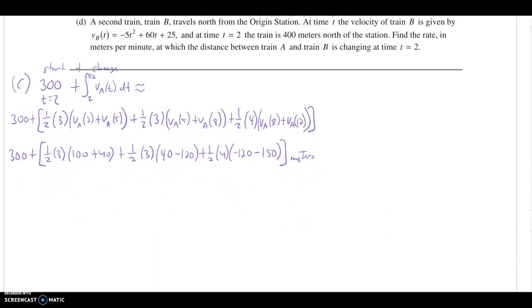Moving to part D. Now, we're going to add a second train to this problem. We already have our train A going east and west, but now we're going to add this train B moving north and south. At time T, the velocity of train B is given by this. We had our VA of T table. We have a velocity of B function. At time 2, that train is 400 meters north of the station. Find the rate in meters per minute at which the distance between those two trains is changing at this time 2. If you think about the directions the trains are moving and where that distance would be, it would be right here as the hypotenuse of a right triangle. We have to be able to visualize this because we're going to need it for what follows.